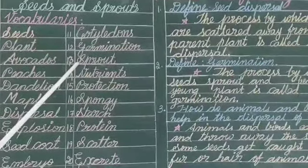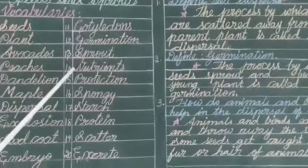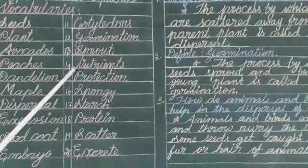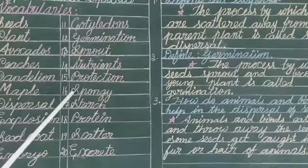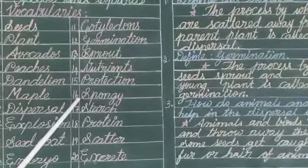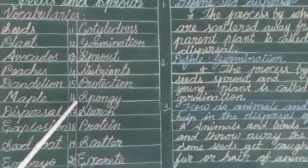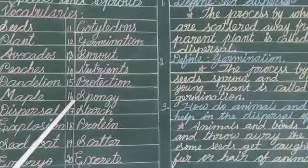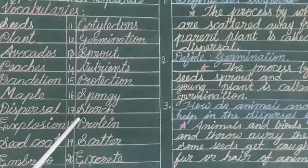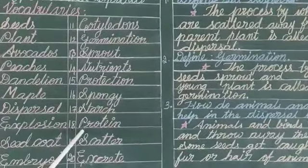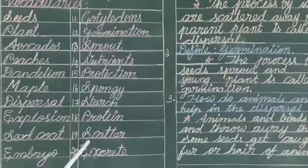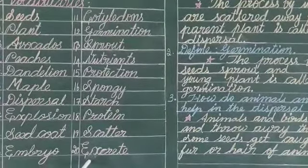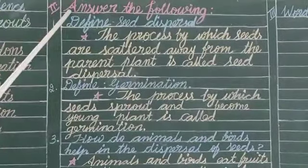Sprout - Molaitpahyir. Nutrients - Ootachatthu. Protection - Pathu Khaapu. Spongey - Punchu Pondrathu. Starch - Marchatthu. Protein - Puratham. Scatter - Vithaiththal. Excrete - Veliayetruthal.